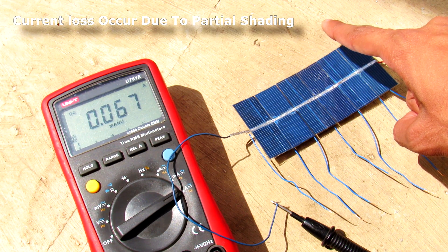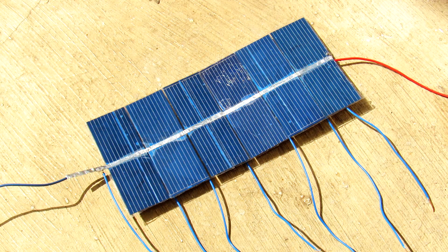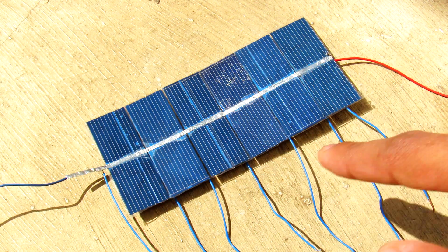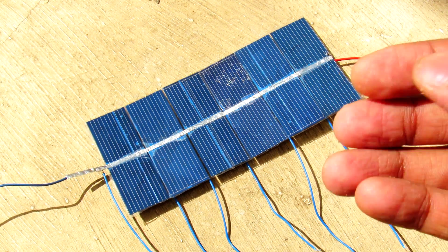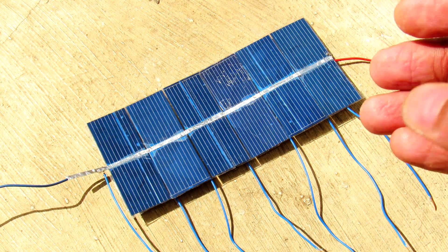Well, this shading loss happens because we have connected all these panels in series to get higher voltage. Each cell will only produce 0.6 volts, so it is necessary to connect all them in series to add up the voltage.